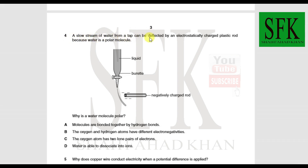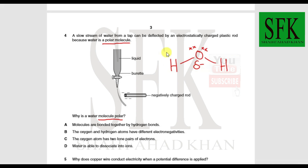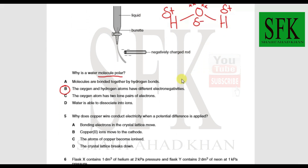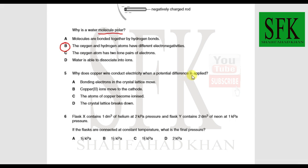MCQ 4: A slow stream of water from a tap can be deflected by an electrostatically charged plastic rod because water is a polar molecule. Water has an oxygen atom bonded to two hydrogen atoms with two lone pairs on oxygen. Oxygen is more electronegative than hydrogen, giving a partial negative charge on oxygen and partial positive charges on the hydrogens, making it polar.